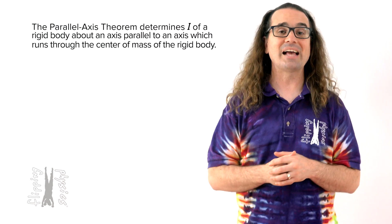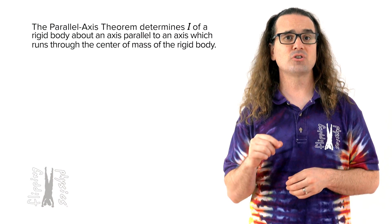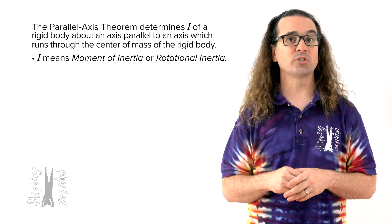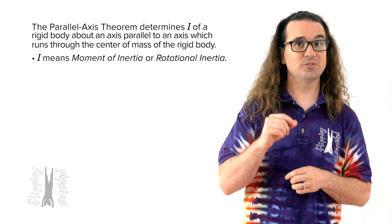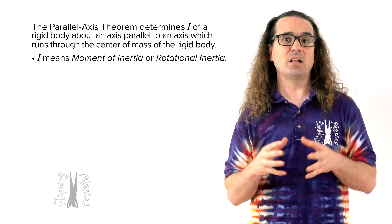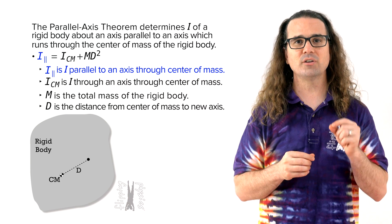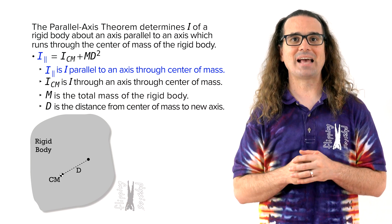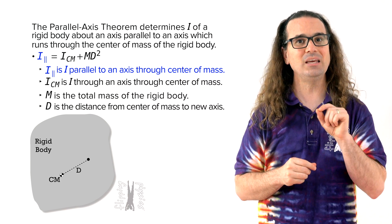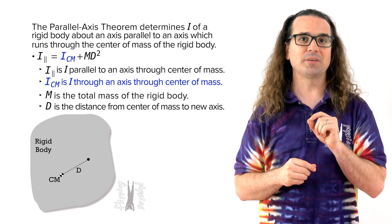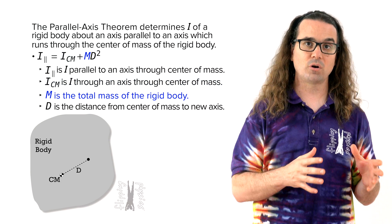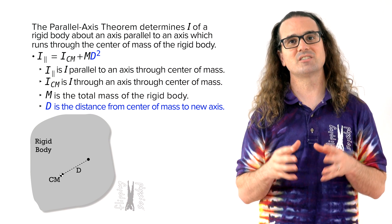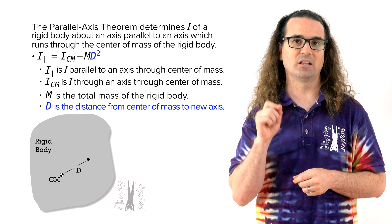Good morning. The parallel axis theorem is a convenient way to determine the moment of inertia or rotational inertia of a rigid body about an axis which is parallel to an axis which runs through the center of mass of the object. The parallel axis theorem states that the rotational inertia about any axis parallel to and a distance capital D away from the axis through the center of mass equals the rotational inertia about the center of mass plus capital M, the total mass, multiplied by the square of capital D, the linear distance between the two parallel axes.